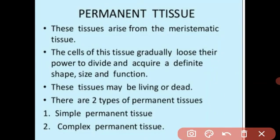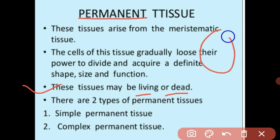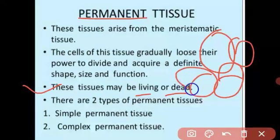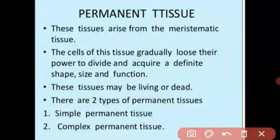You have studied about the characteristics of living things and non-living things. Living things can grow and reproduce. All living things are made from cells. A bunch of cells is called a tissue.